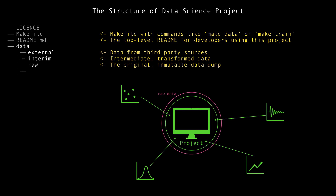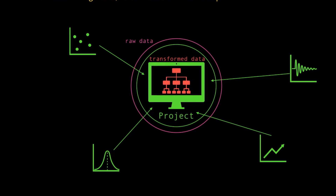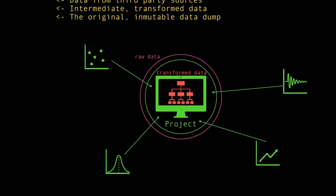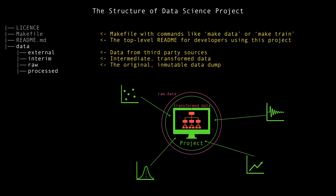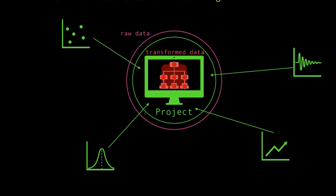The next directory is interim — intermediate and transformed data. We have data transformation processes inside the model, and this is our transformed data. Processes transform raw data from third-party sources into something most suitable for the model — for example, converting original data from four sources into something more readable for the model. The last directory in the data folder is processed data: the final datasets for modeling. After preprocessing, cleaning, and removing outliers, we convert data into a numerical format suitable for the model, which makes predictions, classifications, and regression.